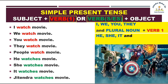Lekin he, she, it, aur agar singular noun aaye toh verb ko S ya ES add karna hai. Yeh label thoda confusion create karta hai. Toh yeh cheez aapko notice karni hai — S ya ES kab lagana hai: he, she, it, and singular noun. Aur S ya ES kab nahi lagana: I, we, you, they, and plural noun.